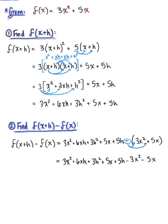Look at all this lovely simplification. We have 3x squared and a minus 3x squared that will cancel each other right out. We also have a plus 5x and a minus 5x, so those terms cancel themselves out. And we are left with 6xh plus 3h squared plus 5h.